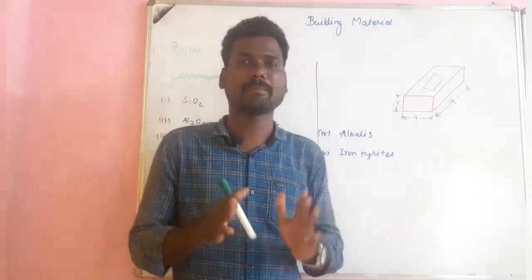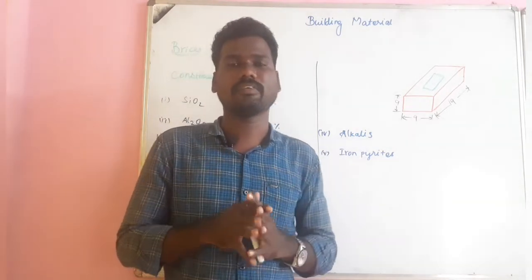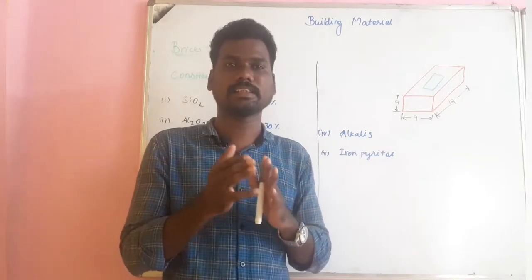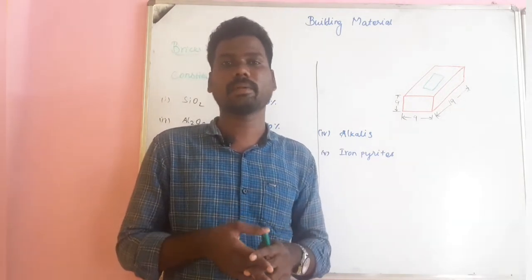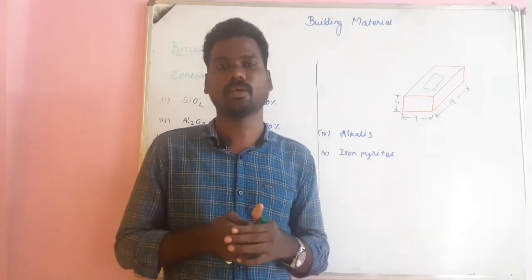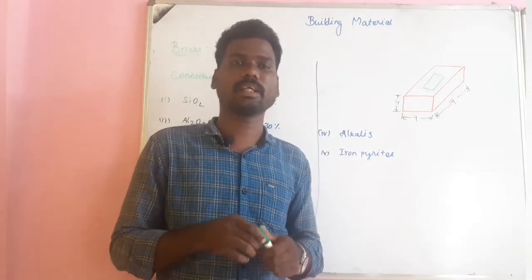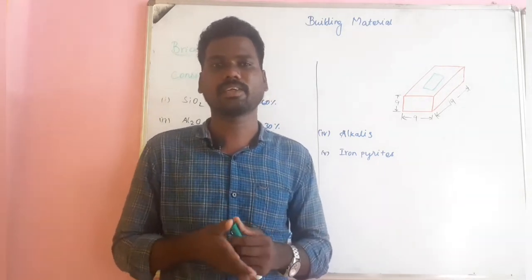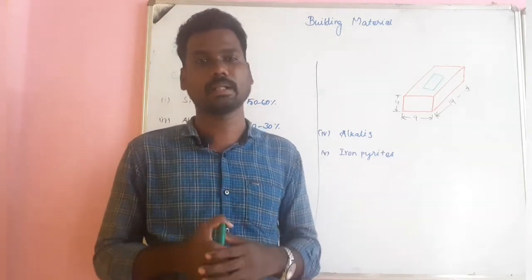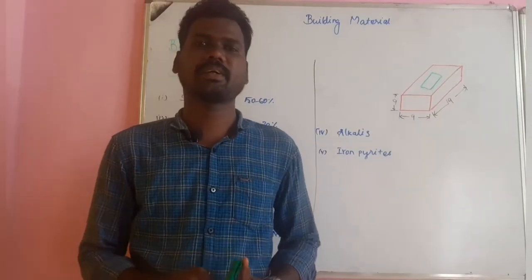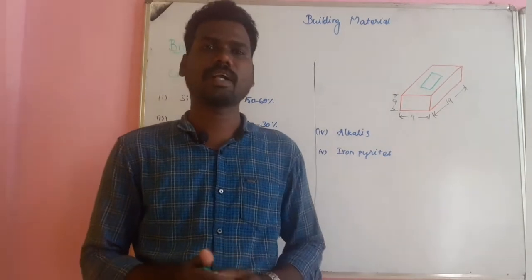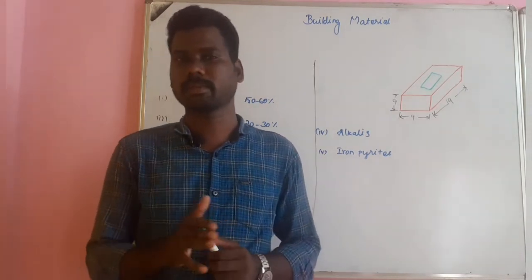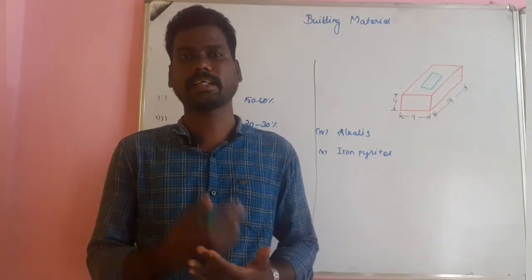The weight of a brick is approximately 1800g. A first-class brick weighs around 3.5kg. Bricks range from 1400g to 1900g. Per one cubic meter, 500 number of bricks are used. Per square meter, 10 Nm² is used. Water absorption for first-class bricks is 2%, for second-class bricks is 22%, and for first-class bricks the absorption limit is 25%.